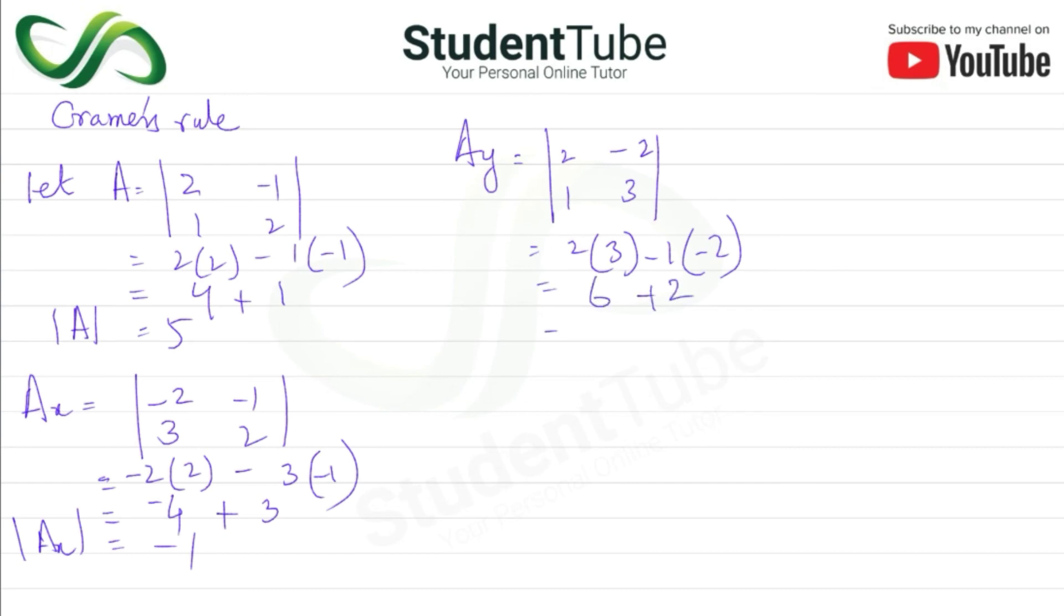So x value is Ax upon A, which gives -1 upon 5, same value. For y, Ay upon A: 8 upon 5. Solution set is {-1/5, 8/5}.